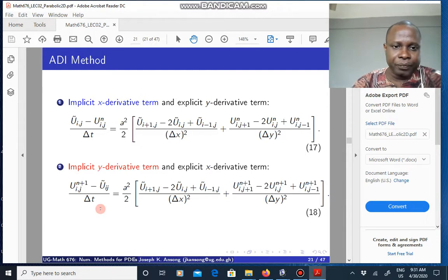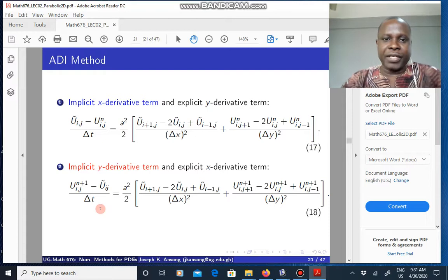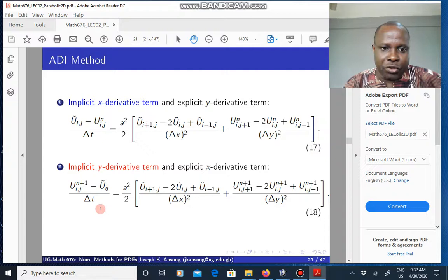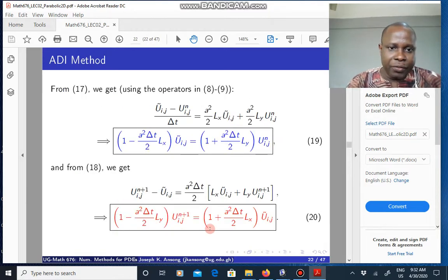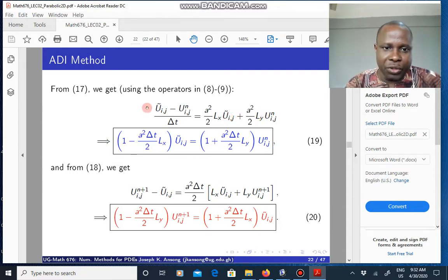We can actually reduce it into a simpler form using the operators that we introduced earlier in a previous lecture. We introduced the operators so that this reduces to Lx U tilde, this is Ly U N, and so on. So if you use the operators, the first equation there can be reduced to this form. The U tilde are unknown, so we can take them to the left-hand side and then the U Ns to the right. And we're going to get this equation here in a more compact form.